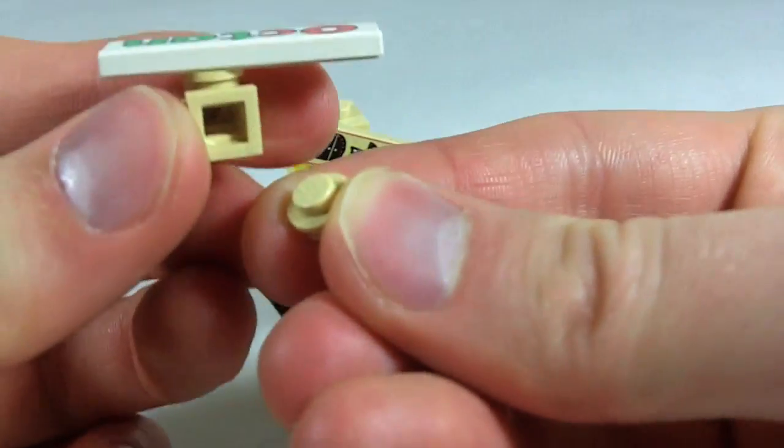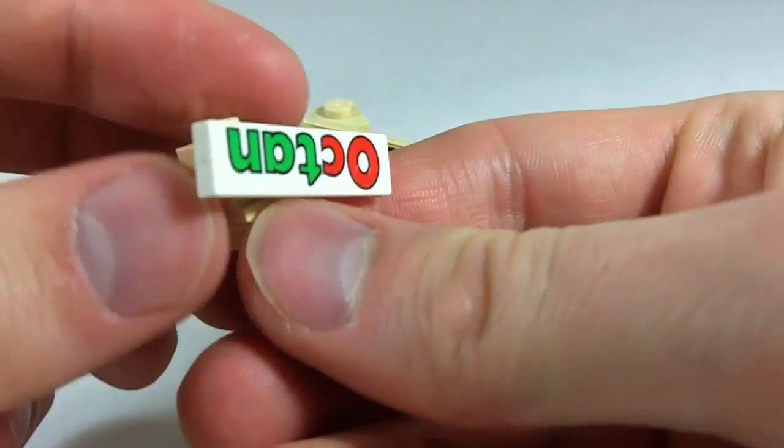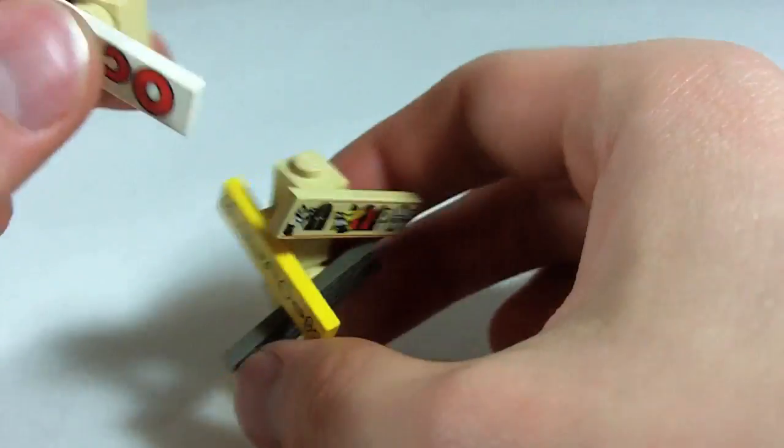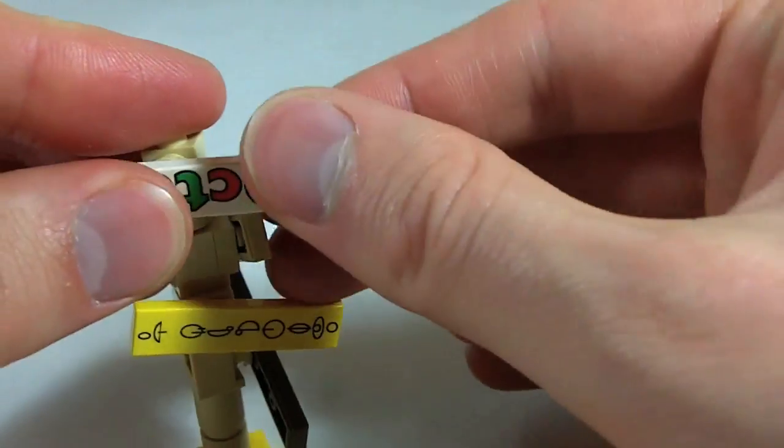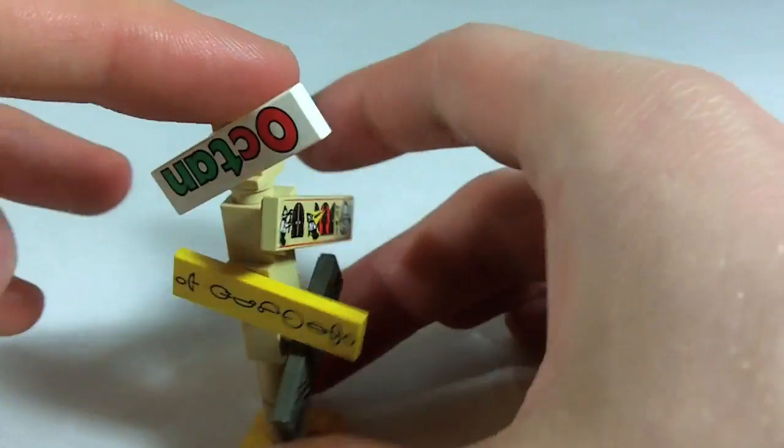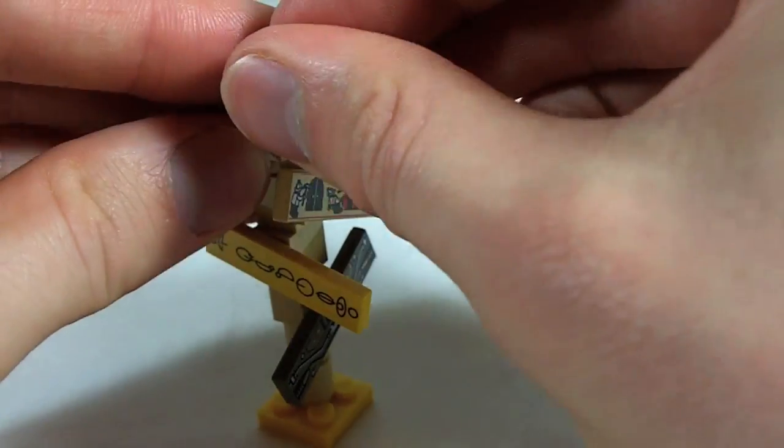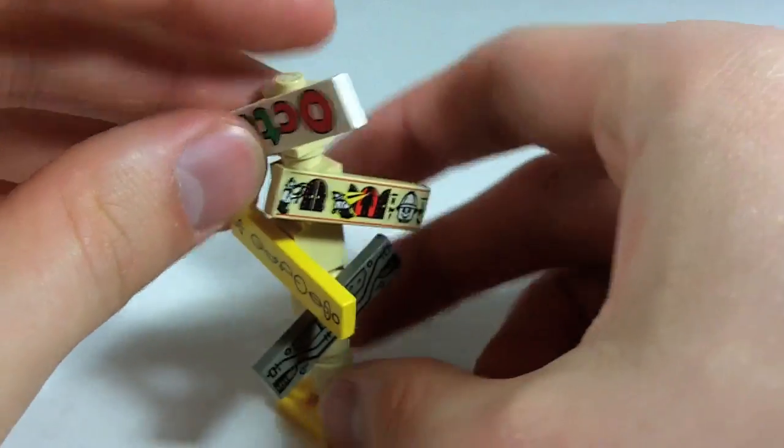And then the last one, for some reason, I put a plate under the headlight brick to make it go a little higher. And then it just says Octan, which is of course the brand of gas in Legoland.